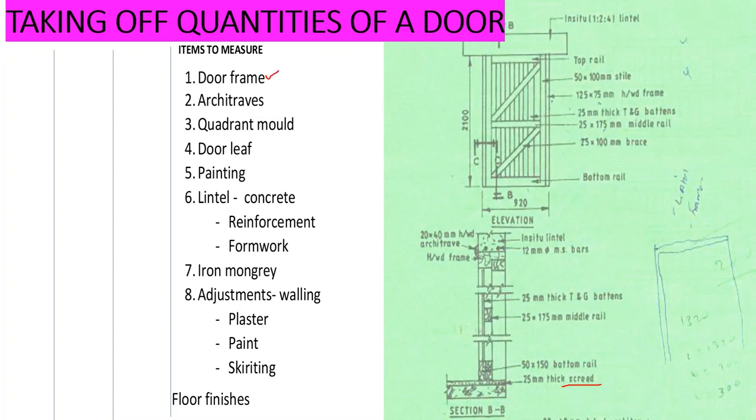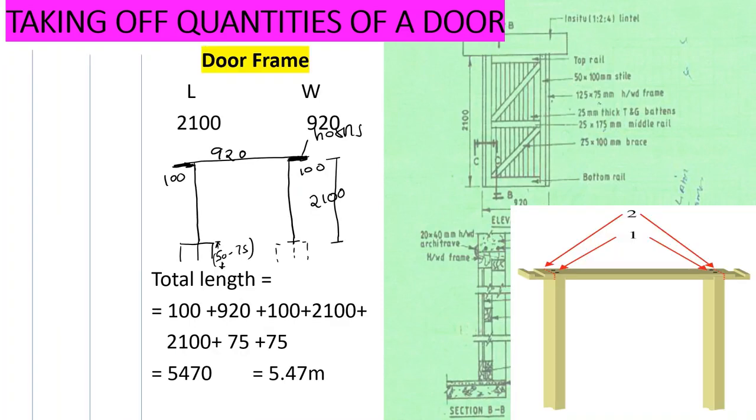So those are the items that we are going to look at. Let's start with the door frame. Our door frame is here. Let's look at our door frame. This is our door frame here, the tiny part that we are seeing here, this one here particularly. For a door frame it looks like this, we have this one, this length, and then the height.